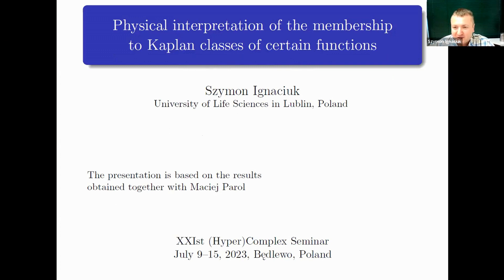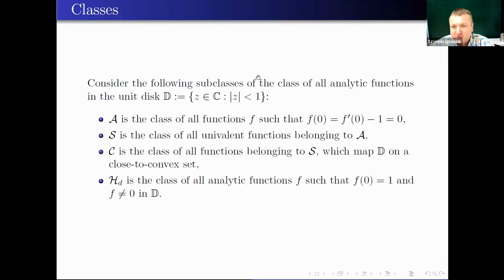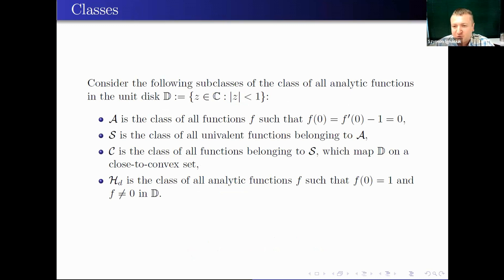I will start by considering some subclasses of all analytic functions in the unit disk. A is the class of all functions f such that f(0)=0 and f'(0)=1. S is the class of all univalent functions belonging to A. C is the class of functions in S which map D onto a close-to-convex set. HD is the class of all analytic functions f such that f(0)=1 and f is non-zero in D — roughly, HD is the class of derivatives of functions from A.